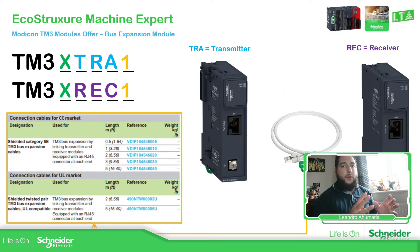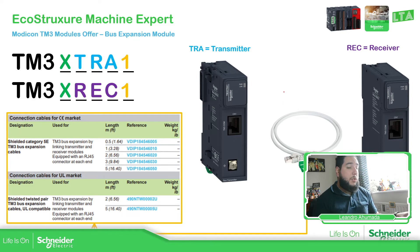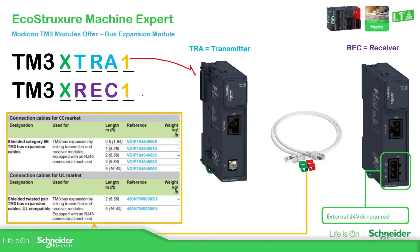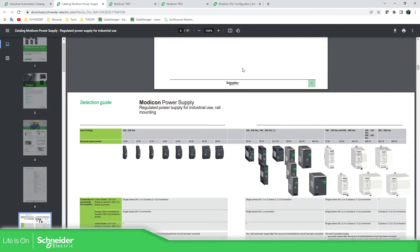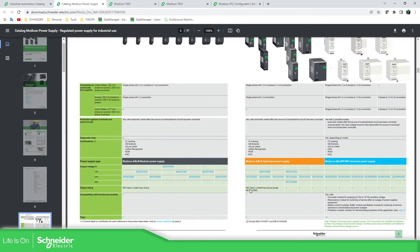As I already mentioned, you have local IO and then remote IO. In order to have remote IOs or extend the modules beyond the limit, you have a transmitter and a receiver. You can use an Ethernet cable to communicate from the transmitter to the receiver, and it can be up to 5 meters. There are different references depending on your market — from 0.5 up to 5 meters. Remember: you will need an external power supply. We also have Modicon power supplies available in our catalog.